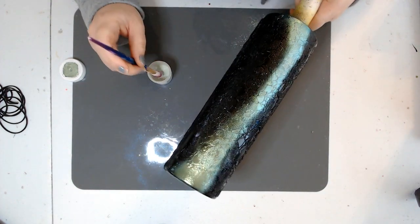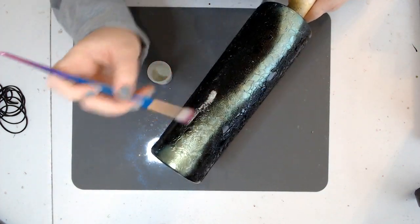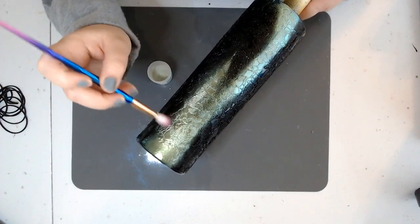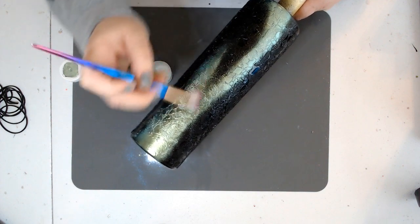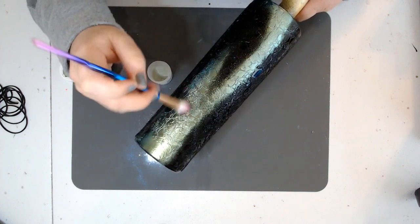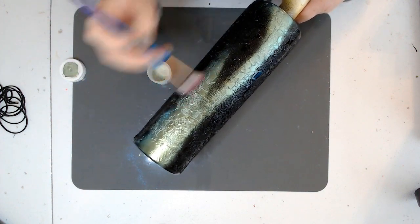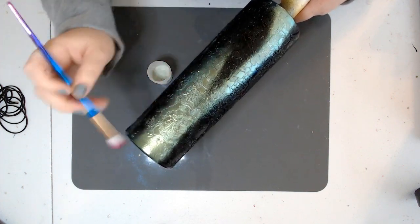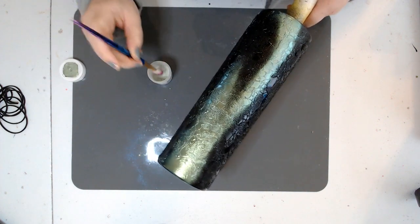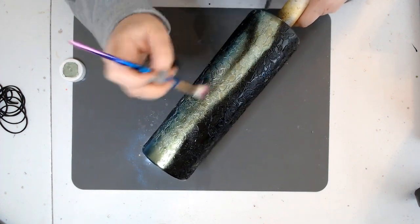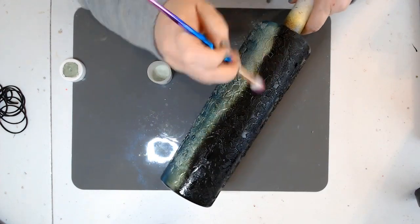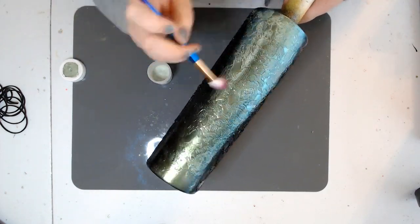I love these chameleon powders so much, it's really hard to capture the color shift that they have. You can see I'm going back and forth, up and down, and then circular motion sometimes. You're just going to do that all the way around the cup, burnishing your micas into the tacky spray paint.